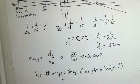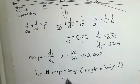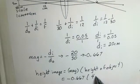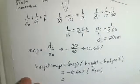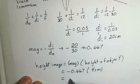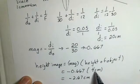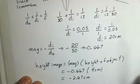We have the magnification number, minus 0.667. The height of the object is 4 centimeters. Multiplying those together, I came up with minus 2.67 centimeters, smaller than the object. That agrees with the ray tracing.